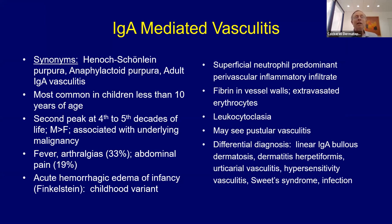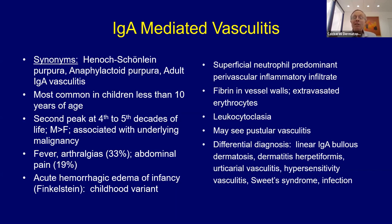IgA-mediated vasculitis — Henoch-Schönlein purpura — can be seen in adults or kids. Finkelstein's disease, the hemorrhagic edema of childhood, is part of this spectrum. There are two peaks — in adults and in children. They can be associated with fever, arthralgias, and abdominal pain. On biopsy it looks similar to other vasculitis, but IgA vasculitis tends to give more neutrophils, more intact neutrophils, and more evidence of pustular vasculitis. IgA is a direct neutrophil chemotactin, so you get more intact neutrophils and more pustular vasculitis with this form.